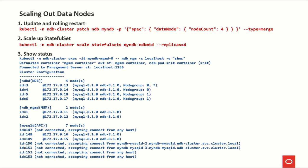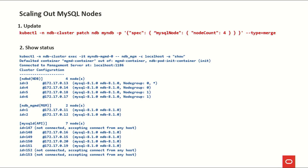After the rolling restart is done, we log back into the management node and run ndb_mgm show. We now see four data nodes and two node groups — not one node group anymore — because redundancy level is 2 and data node count is 4.